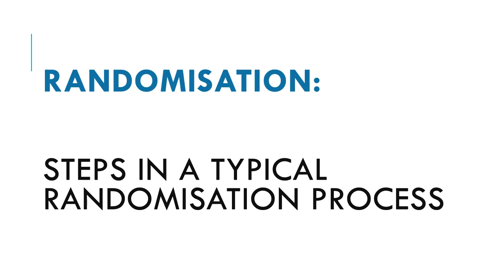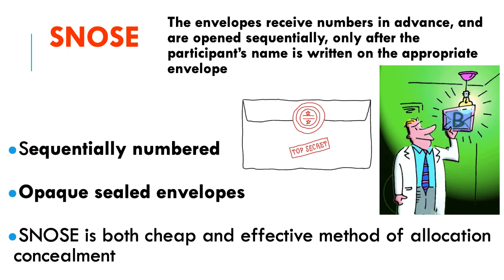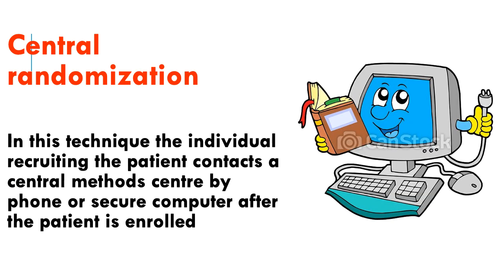The first important step is randomization, which can be performed with simple methods. You can divide patients into two groups using odd-even numbers as a sequential method. A second method is the use of opaque sealed envelopes, where the investigator does not know which group the patient is assigned to. Randomization can also be done using computers and mobile devices.